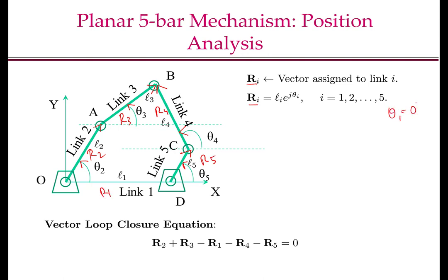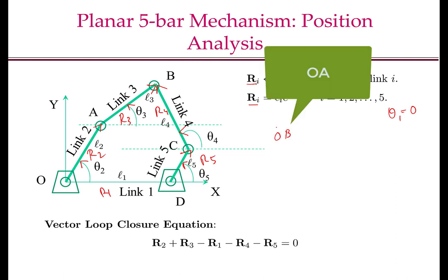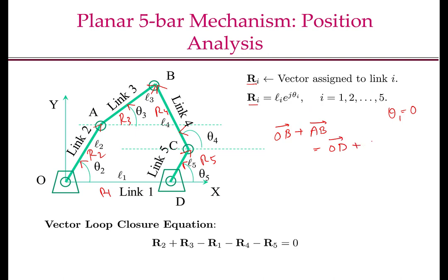In this example, θ₁ equals 0. The vector loop closure equation is OA plus AB equals OD plus DC plus CB, which is the same as R2 plus R3 equals R1 plus R5 plus R4. You can rearrange this to the standard form by taking R1, R5, and R4 to the left-hand side. Then substitute Ri equal to Li·e^(jθᵢ) and expand using Euler's formula, equating real and imaginary parts to zero to form two trigonometric equations.